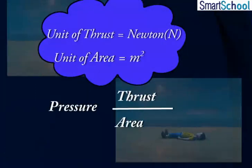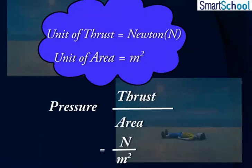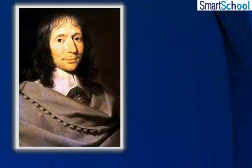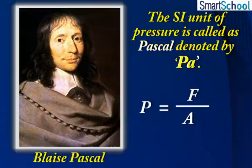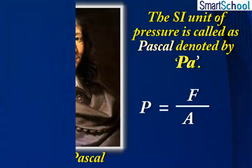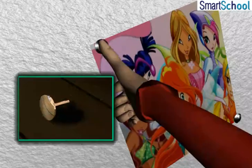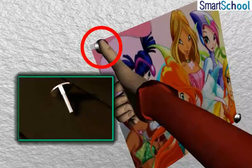Substituting the SI unit of thrust and area in the equation, the unit of pressure is N divided by m squared. In honour of scientist Blaise Pascal, the SI unit of pressure is called Pascal, denoted by Pa. The same force acting on a smaller area exerts a larger pressure, and a smaller pressure on a larger area.